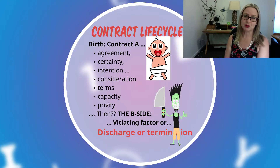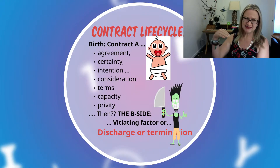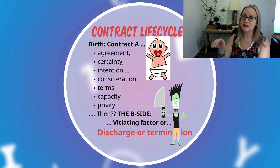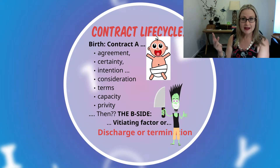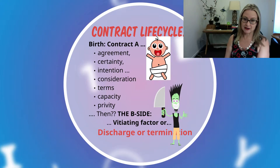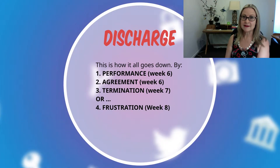In Contract B we get to cover all of the unpicking of a contract. We've already had a look at vitiating factors — mistake, misrepresentation, misleading and deceptive conduct, then a side excursion into estoppel, then back again to look at duress, undue influence, unconscionable conduct, and illegality. Following on from there we get to start looking at discharge, and today we will be looking at performance and agreement.